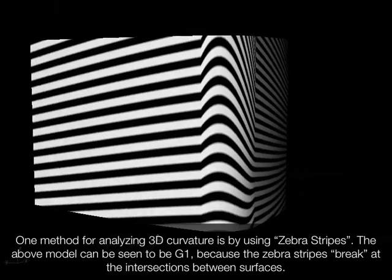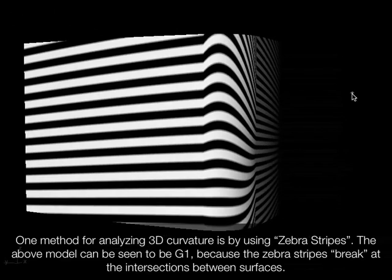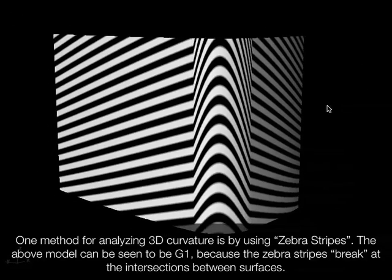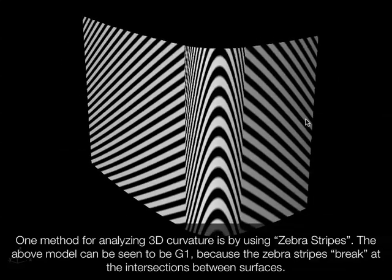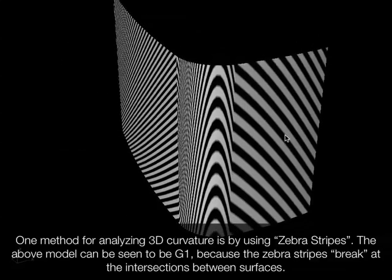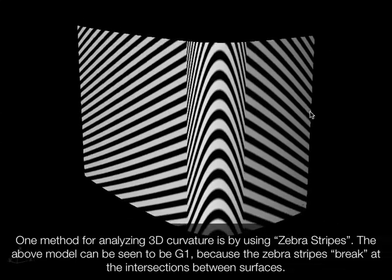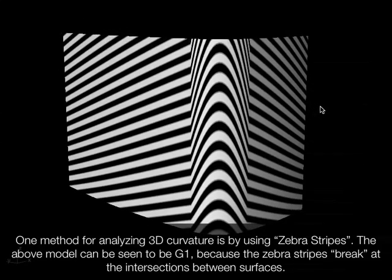Curvature combs are used for curvilinear elements, but on surfaces, one common technique for rapidly evaluating curvature continuity is known as zebra stripes. G1 continuous surfaces will make themselves very obvious when you turn on the zebra stripes, because the stripes will break at the points between surfaces — you can see that the three surfaces are very obviously separated by a hard break in the zebra stripes.